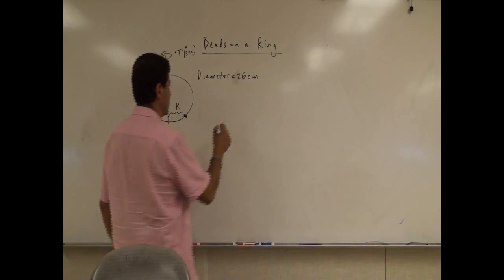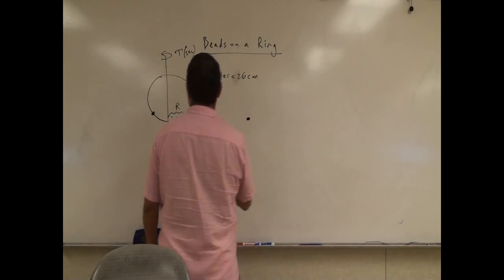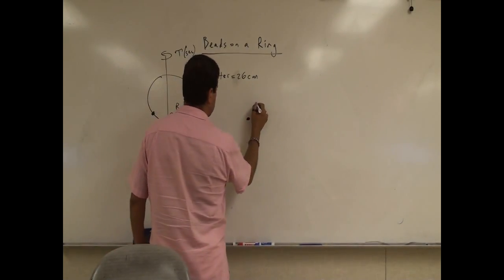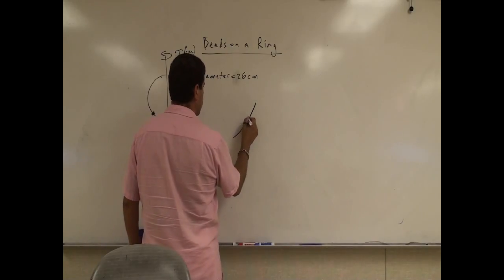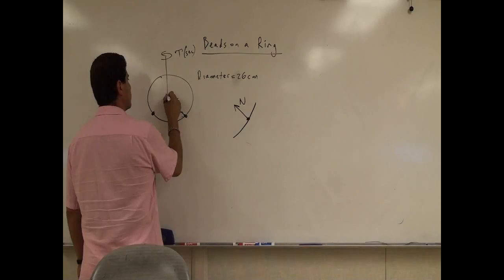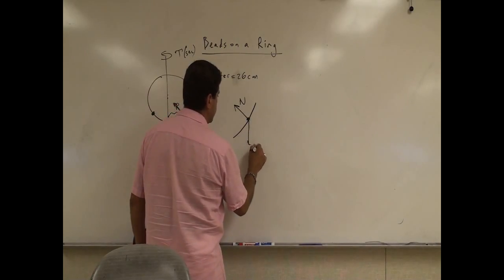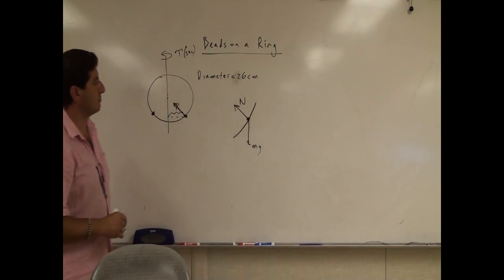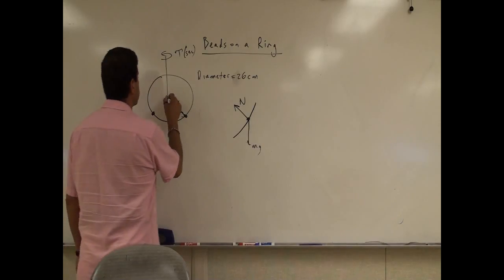This is the physics of this. Okay, so we have a free body diagram of the object will look like this. It's on a ring. There's a normal force pushing it towards the center of the circle.